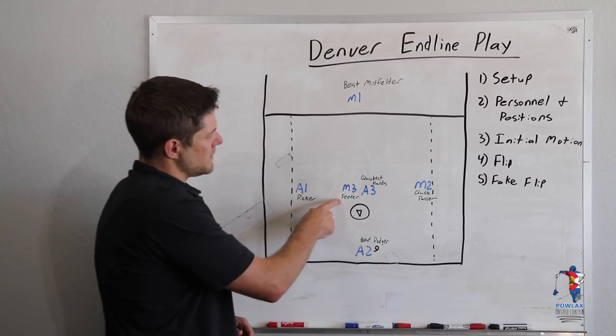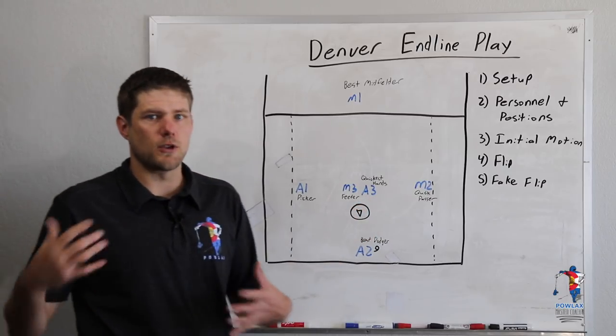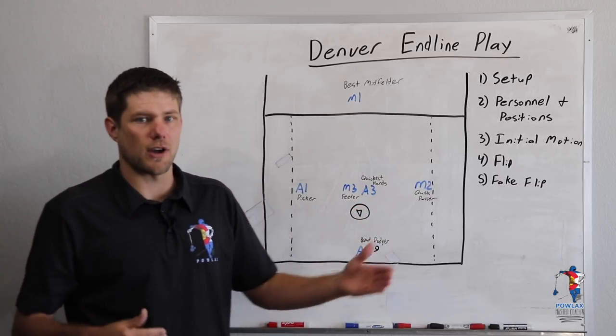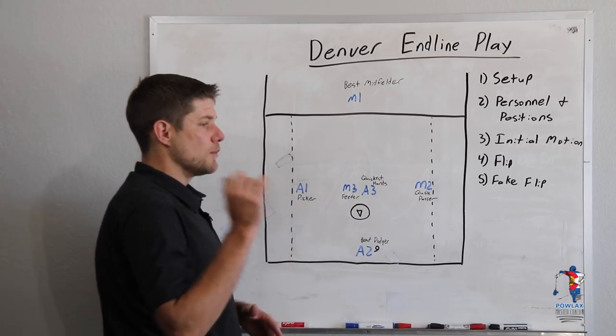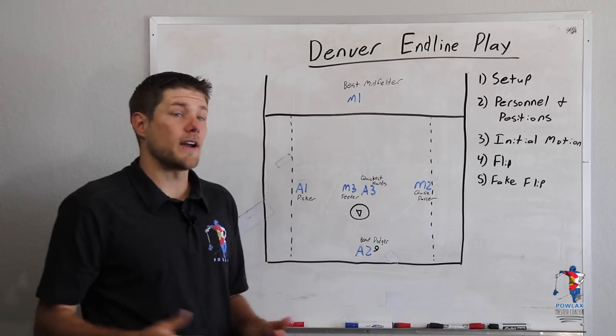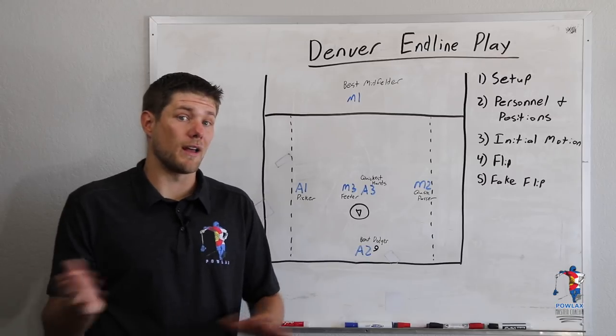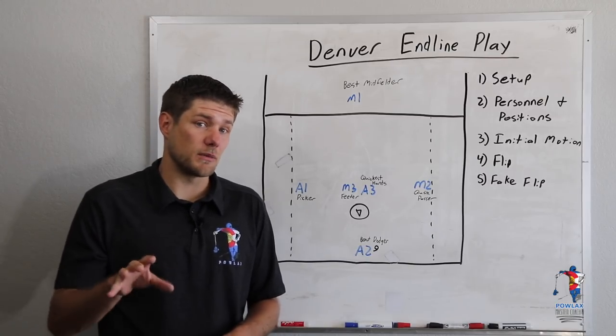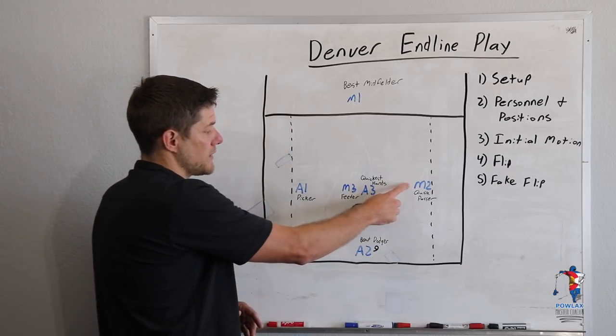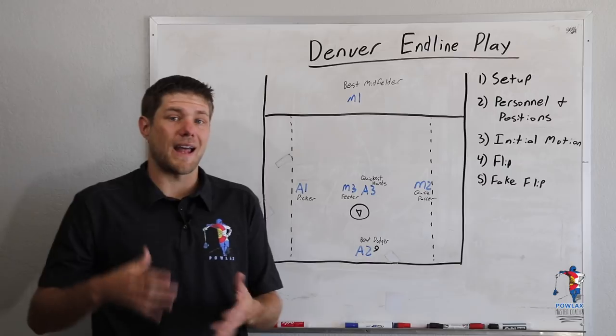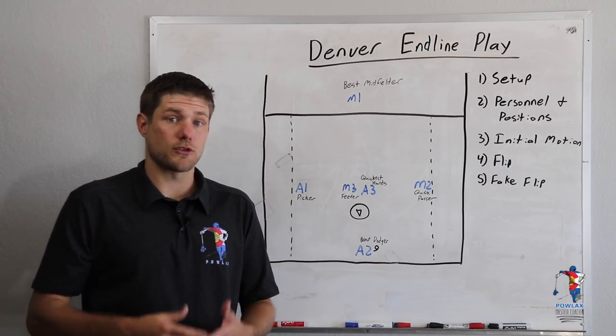Inside here, this is going to be our best feeder. A3 is going to be our player with the quickest hands, someone who can catch a ball and get a shot off. This was Wesley Berg for Denver. M2 is going to be a player who can catch and move the ball very quickly. And finally, M1 up top is going to be our best midfielder, someone who is definitely going to draw our LSM matchup. And this is extremely important that our LSM ends up up here, because we really want to make sure that M2 has a shorty and M3 has a shorty, so that as they are catching and moving the ball, there's not a long pole on them who could screw up our ball movement.